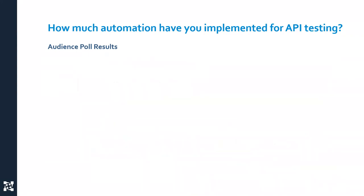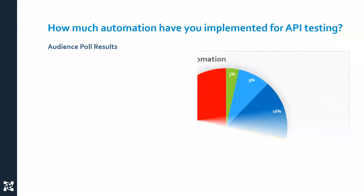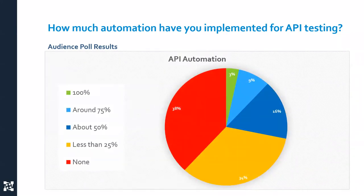Tests at higher levels of the pyramid are difficult to maintain in automation over time. API tests and unit tests are extremely fast to execute in automation, but they require a level of technical expertise to build. What's even more pervasive now is the martini glass pattern — an increased focus on automation at the tops of the pyramid, with manual testers skipping past API testing and doing only a little unit testing. We asked attendees: how much automation have you implemented for APIs?